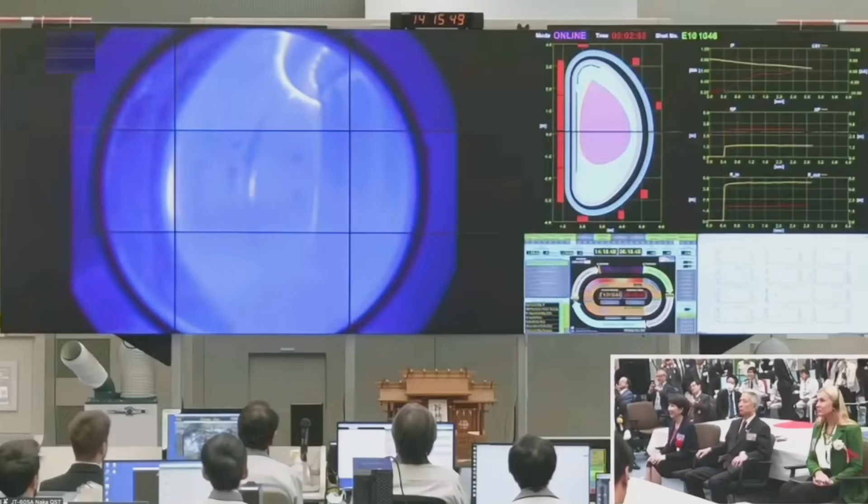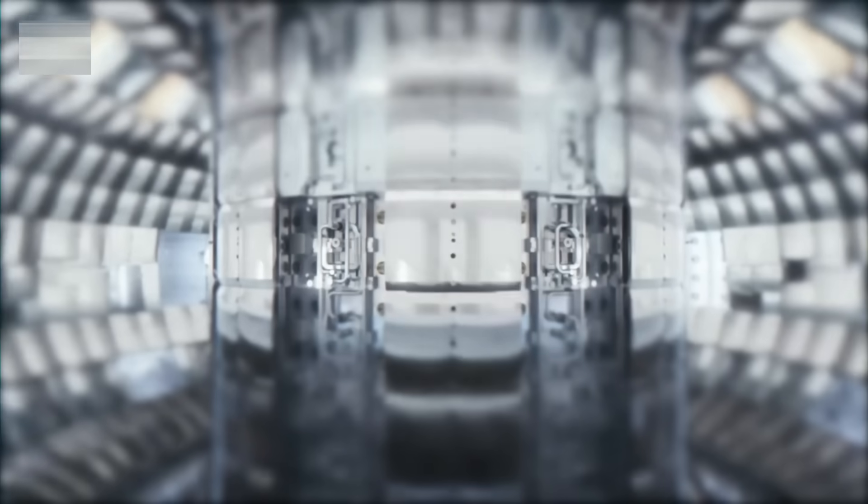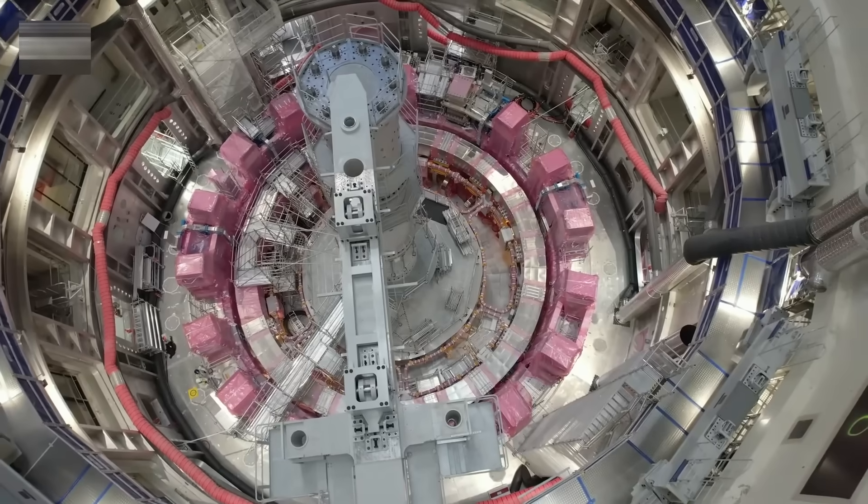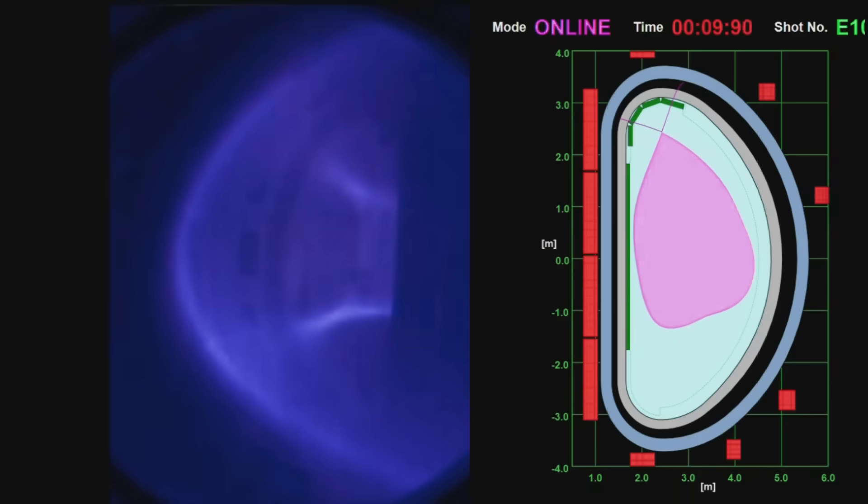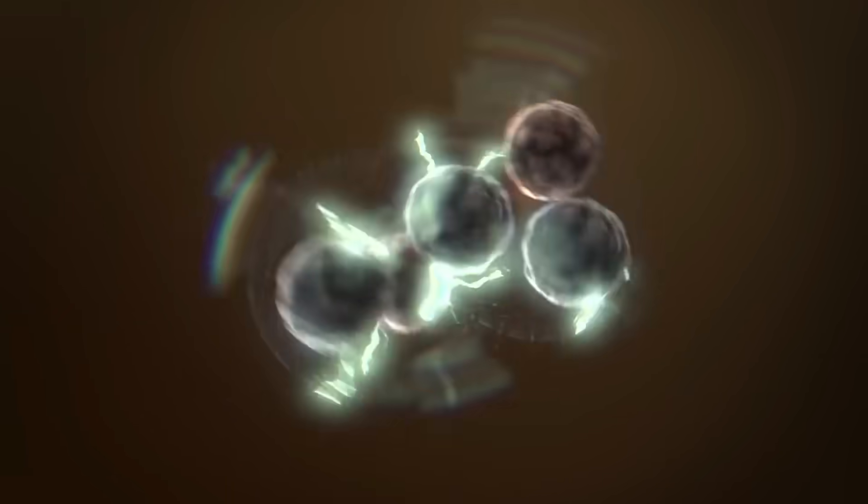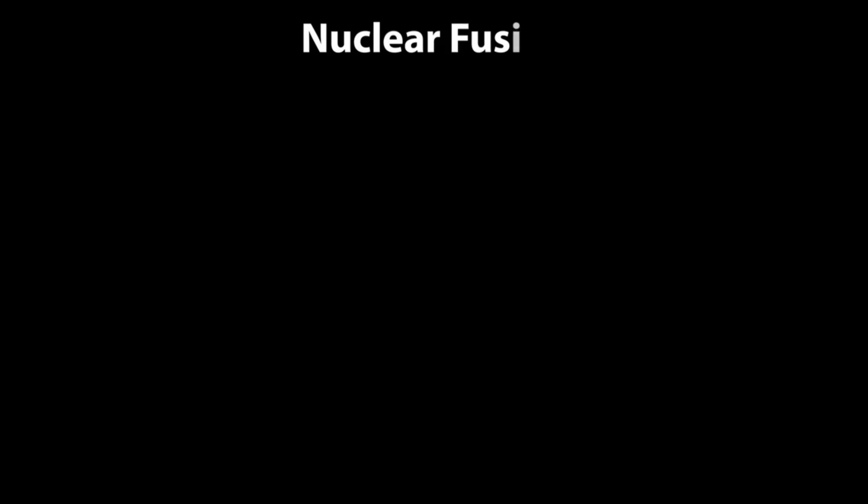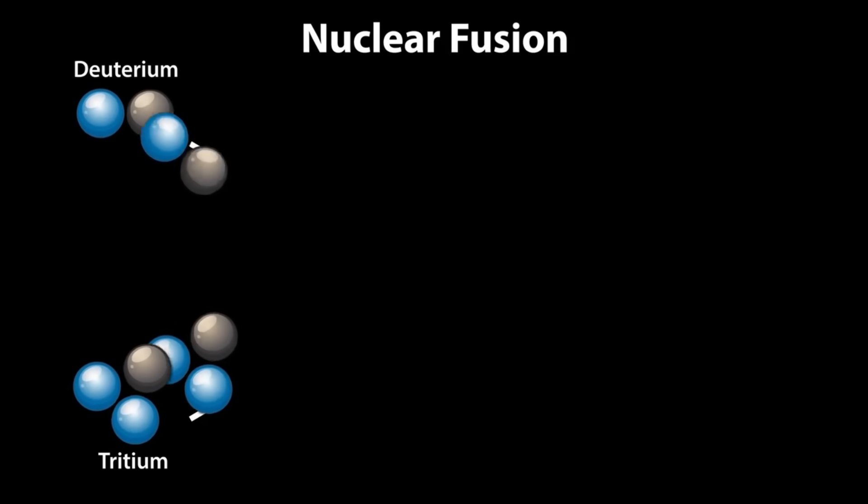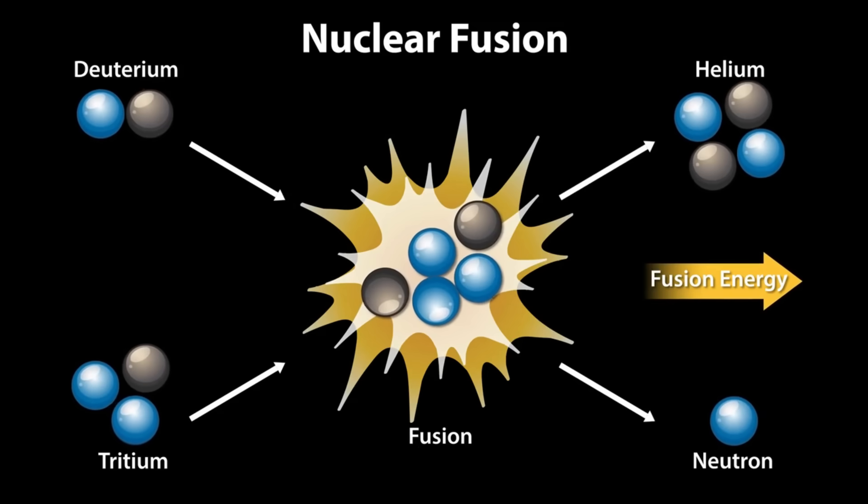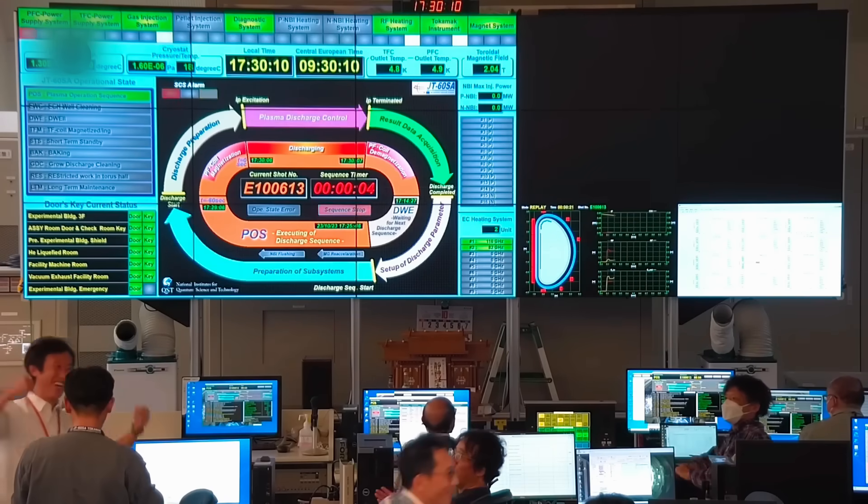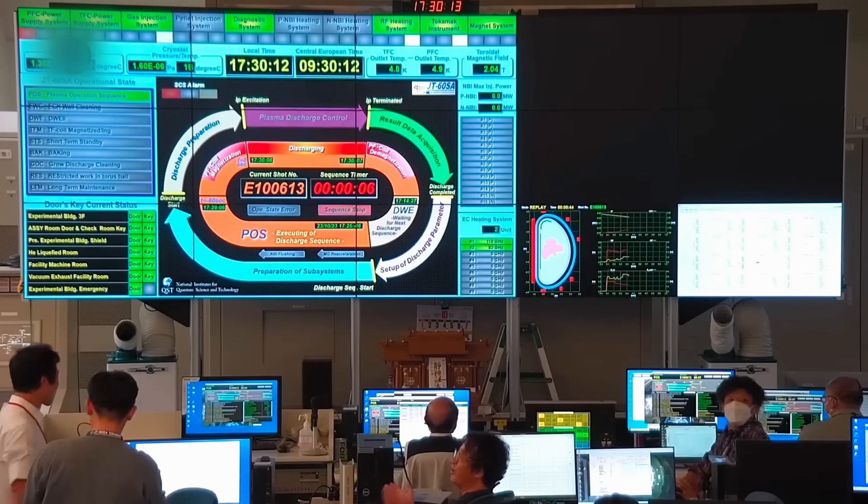The neutron flux suddenly jumped ten-fold. Then the gamma ray detectors spiked. Whatever it was, one sensor wasn't enough. Every system reacted. At that moment, everything in the room shifts. Not just because of risk, but because you're now in uncharted territory. And when machines that are trained to protect your billion-dollar reactor hit the kill switch on their own, you listen.